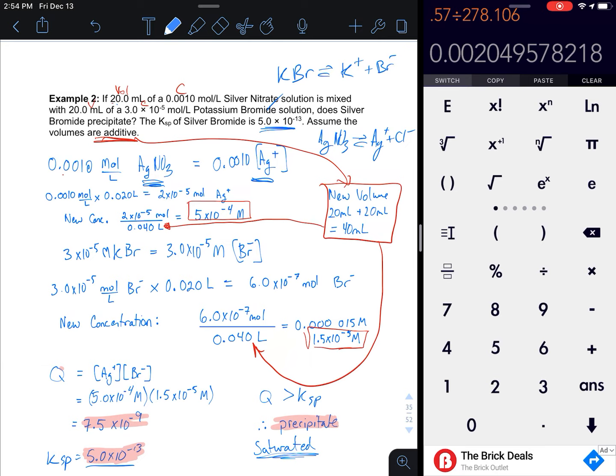Here's the tricky part: I'm going to have a new volume at the end. I'm adding 20 mL plus 20 mL, giving me 40 mL total. This is a big deal because the concentration is halved. I multiplied my molarity by my original volume to figure out how many moles of silver I had, then divide by the new volume to get the new concentration.